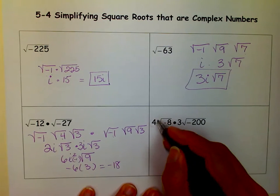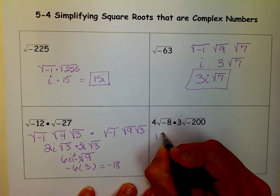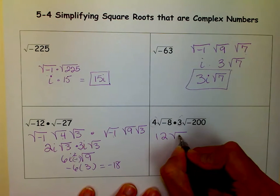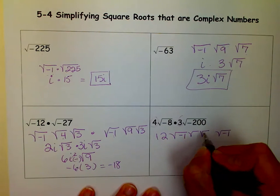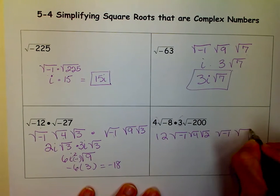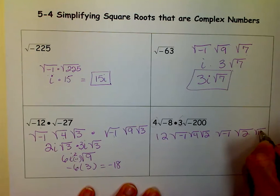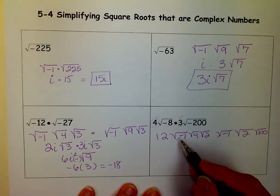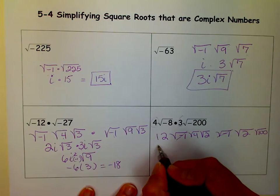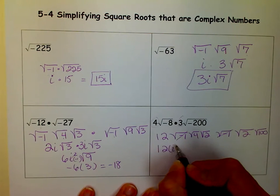Moving on to this one. I can do the outsides together right now, 12. And then I know I'm going to have a negative 1 here and a negative 1 here. And then 8 is 4 times 2. And 200 is 2 times 100. Well, these guys, the negative 1s, that's an i times an i, makes an i squared. So I have 12 times i squared.